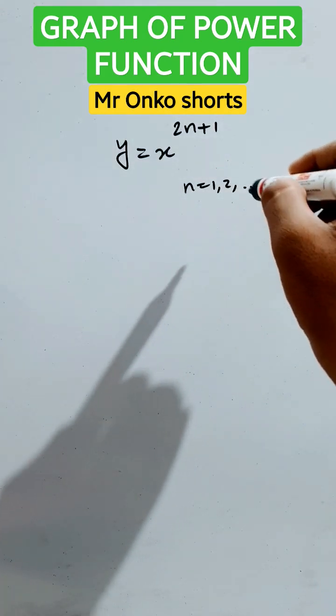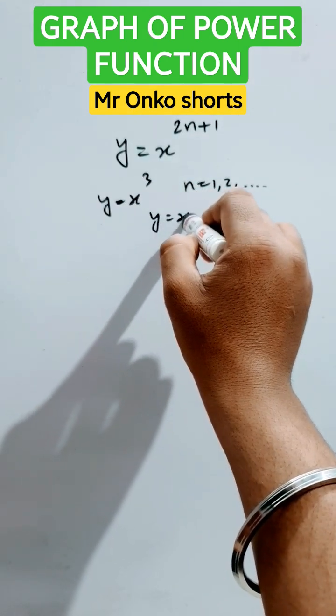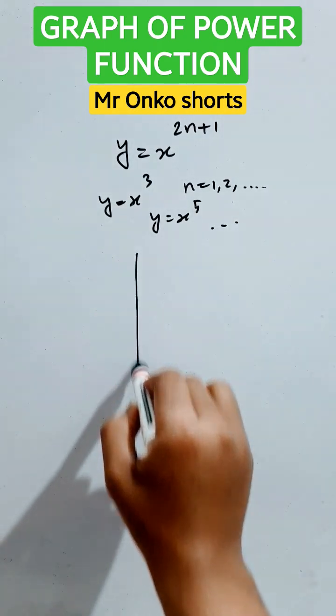That is y equals to x cube, y equals to x to the power 5, and so on. So let's draw the graph in the Cartesian coordinate system.